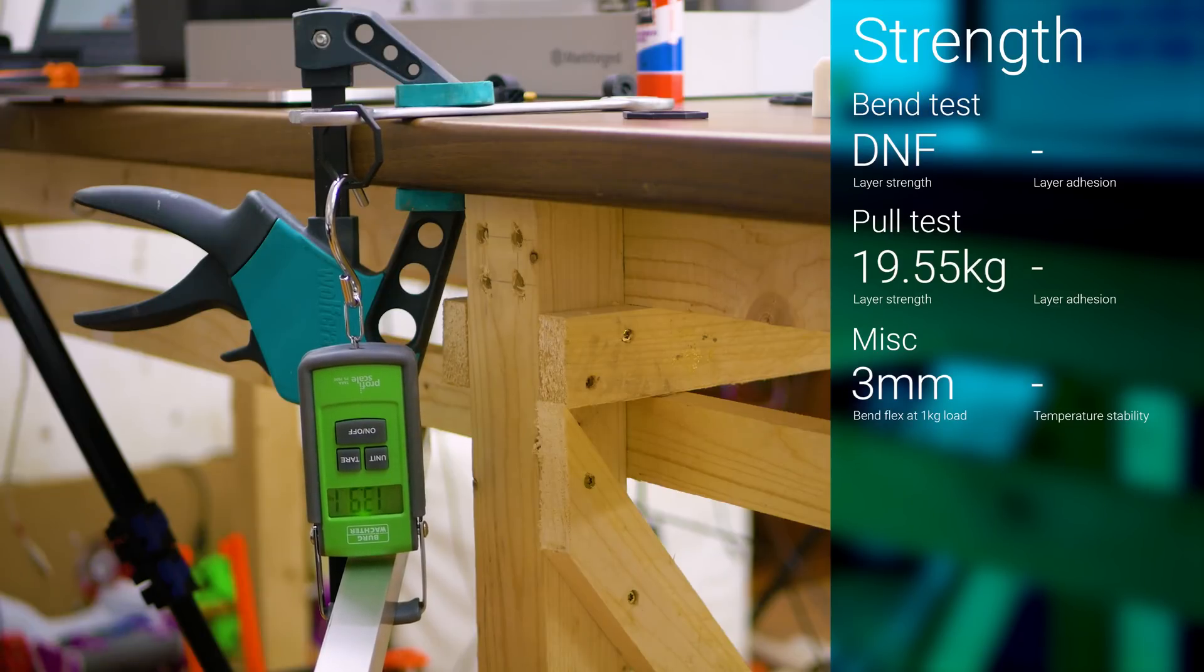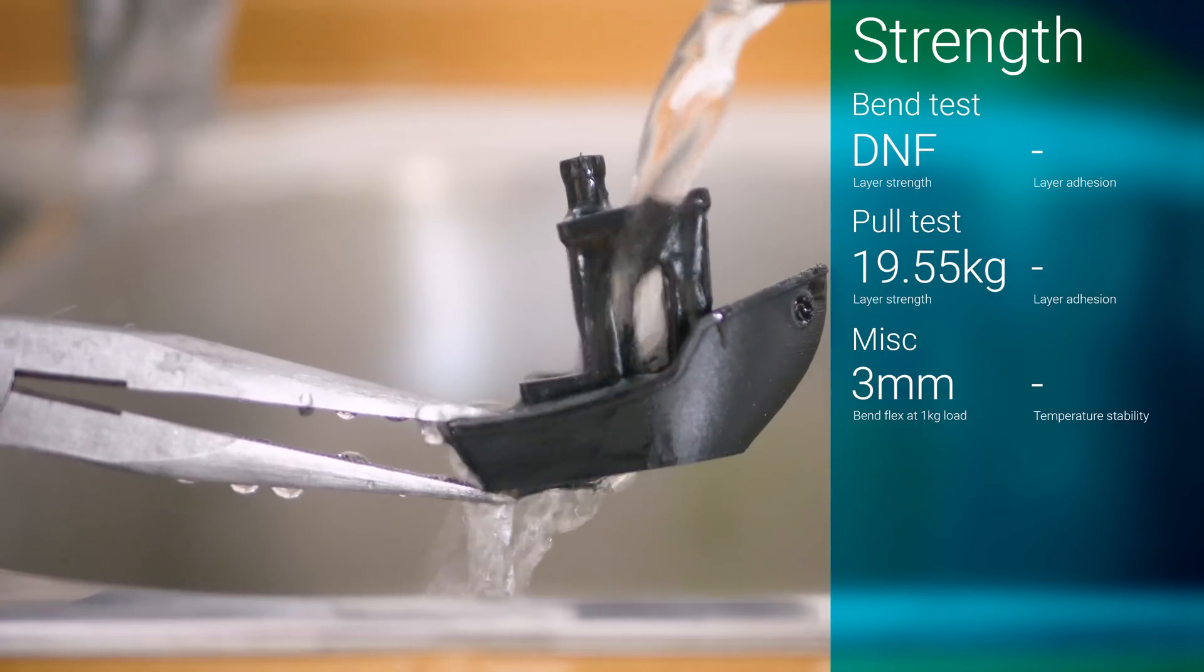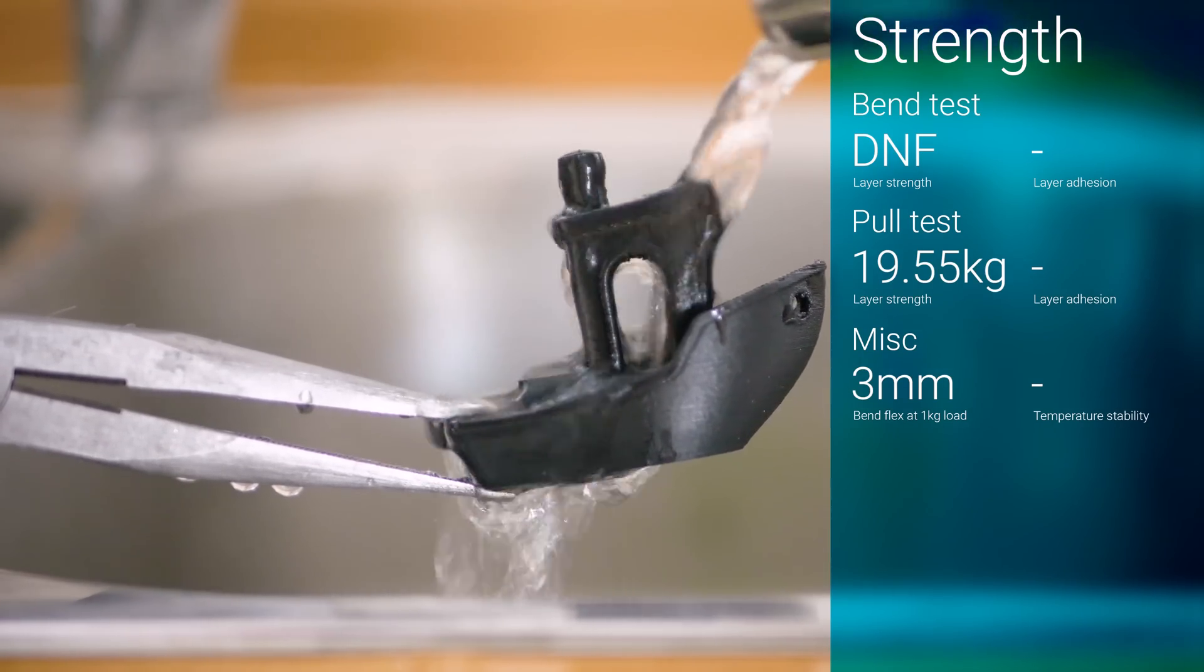The pull test did actually snap this time, but did so while keeping its shape much better than the pure Onyx part, which only survived after deforming a large amount.